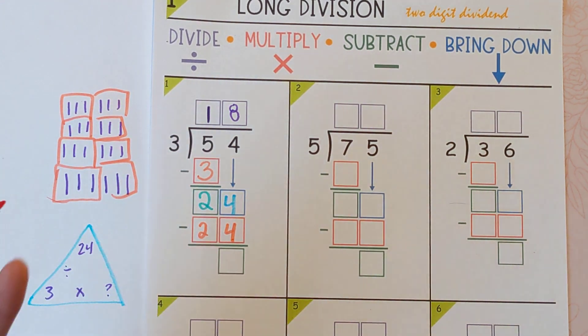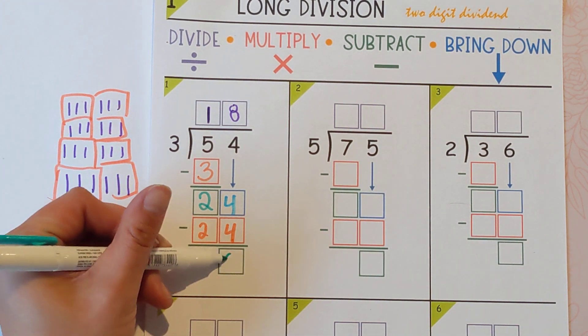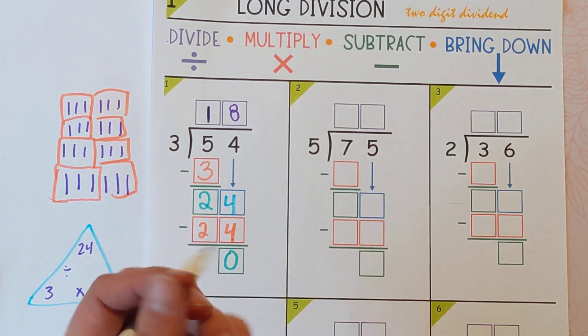And then we subtract just to see if we had anything left over. 24 minus 24 is zero, which means there's nothing left over.